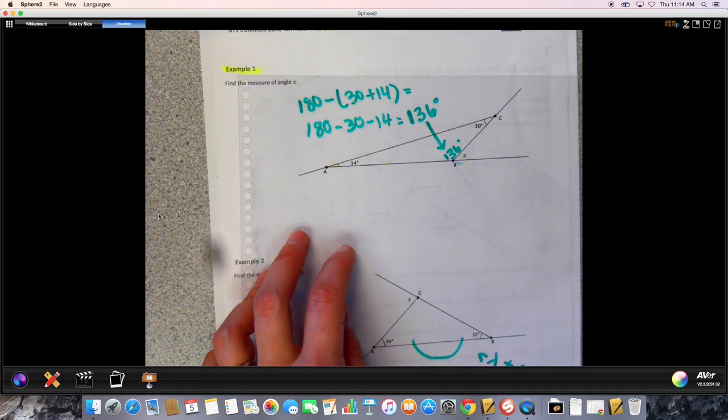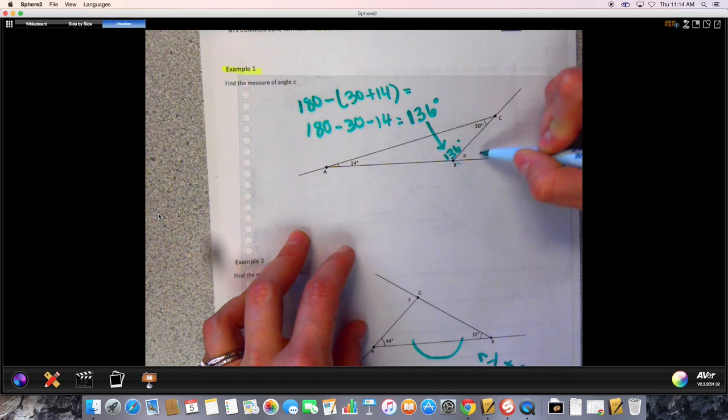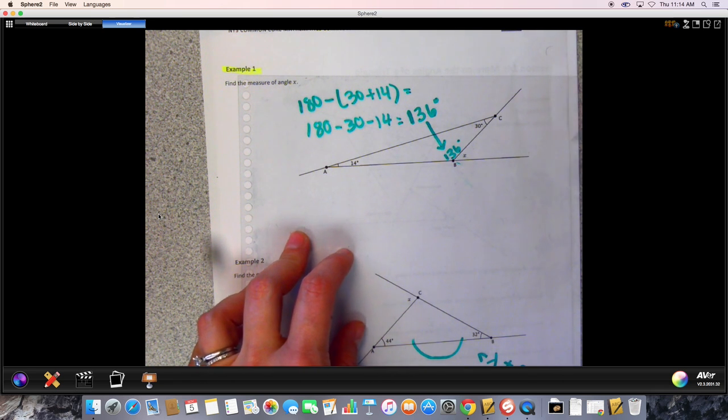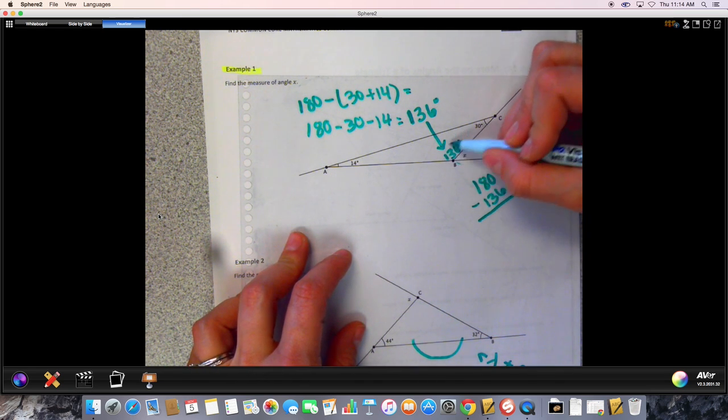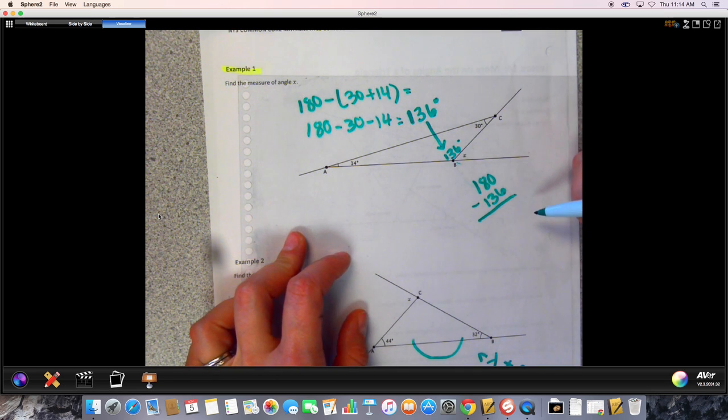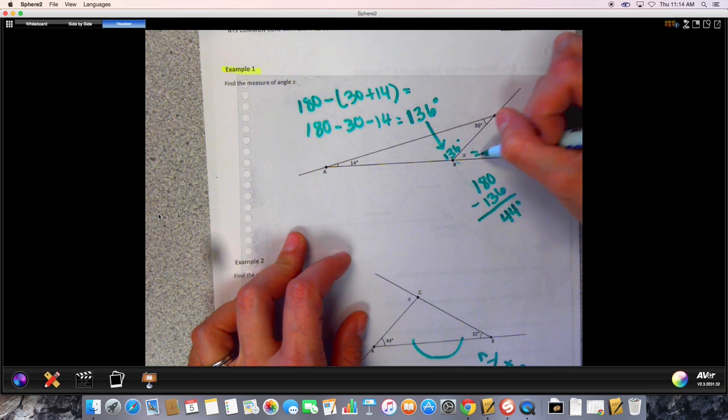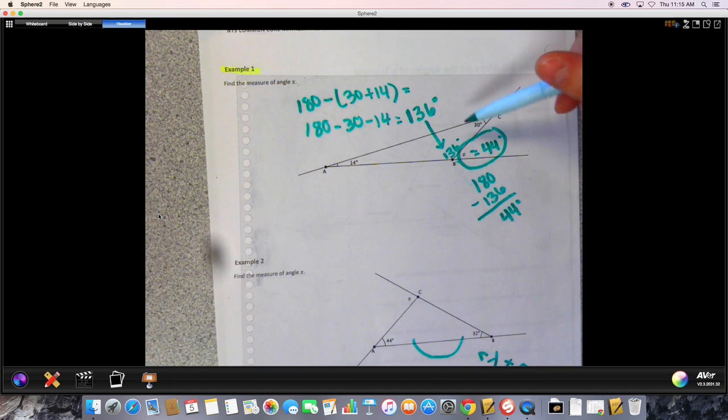So your angle right here is 136 degrees. Once you figure that out, you now can figure out x because we know that x and your 136 lie on this straight line here, and a straight line equals 180 degrees. So what you do now is you do 180 minus your 136, because the 136 is taken up, and you should be able to get your answer for x. And that would be 44 degrees. So x equals 44 degrees here. So two steps: the first one was to figure out the angle inside the triangle, and you use that then to figure out the angle on the outside of the triangle.